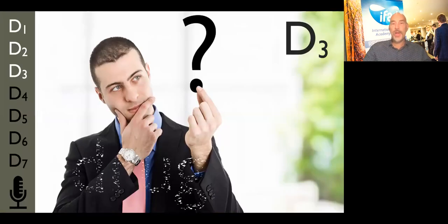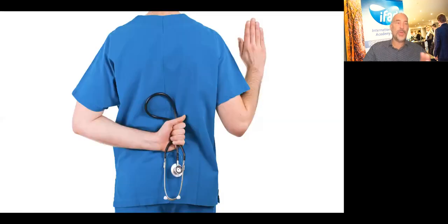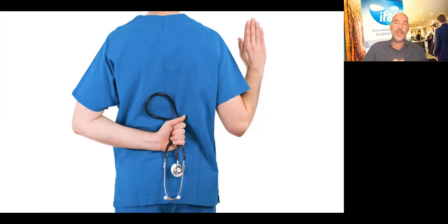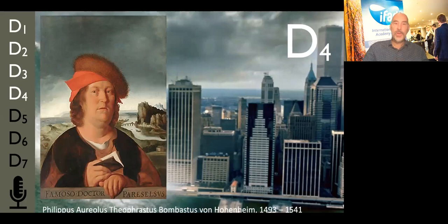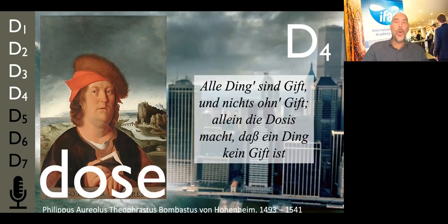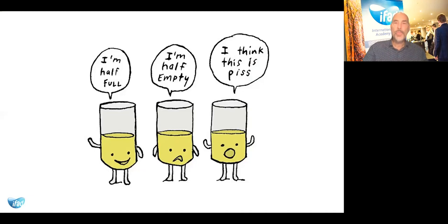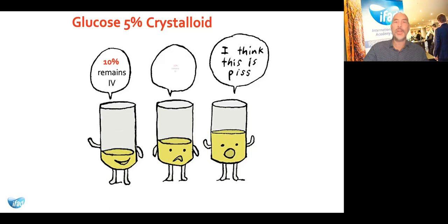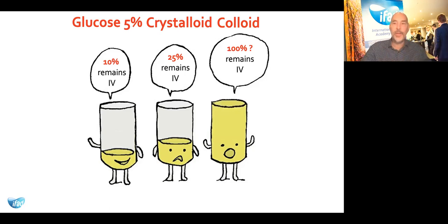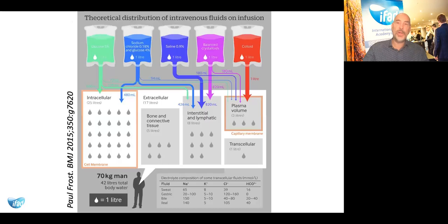D3 is about the drug. Fluids are drugs — they come with indications, contraindications, maximum doses, and potential adverse effects. The first goal is to avoid doing harm. As all things are poisonous, it is the dose that makes the poison. If you would like to save lives during the resuscitation phase, it's probably not a good idea to give a hypotonic solution, as only 10% will remain intravascular. For crystalloids, it's about 25–30%, and colloids are assumed to remain 100% intravascular at least during the first four to six hours.